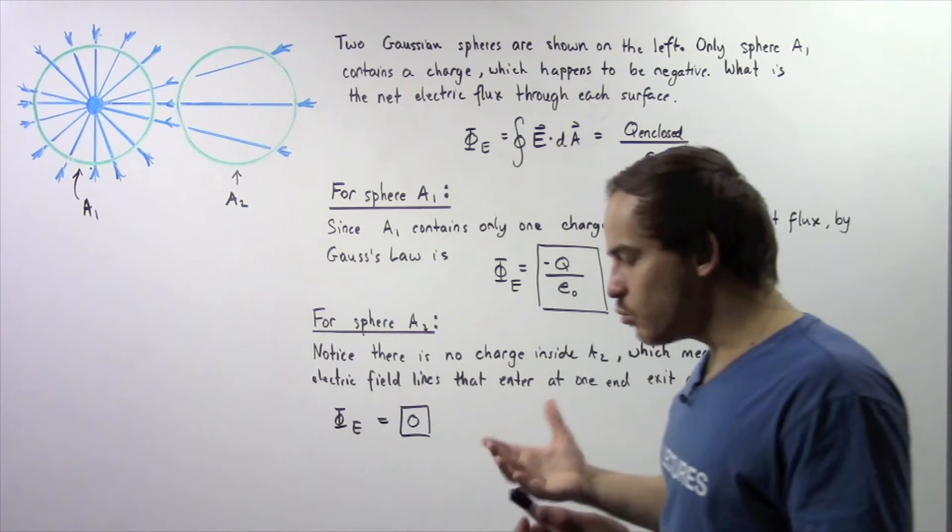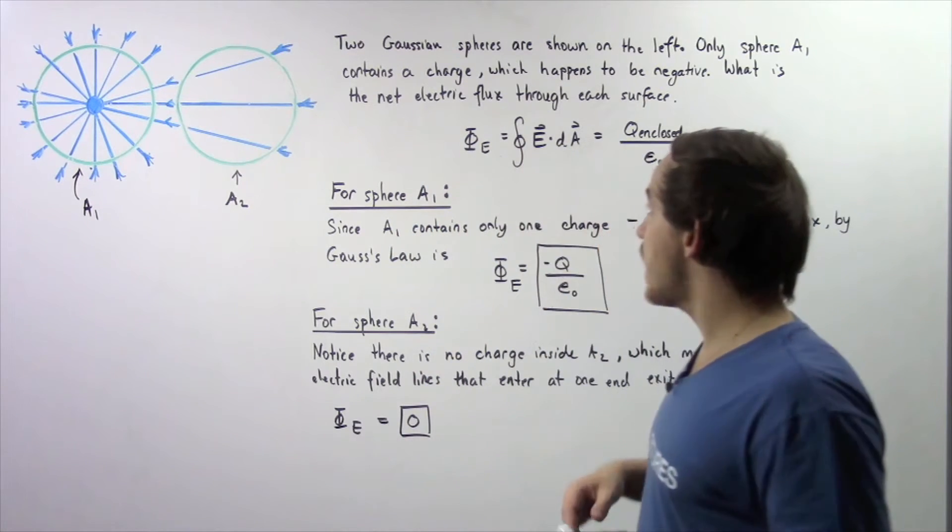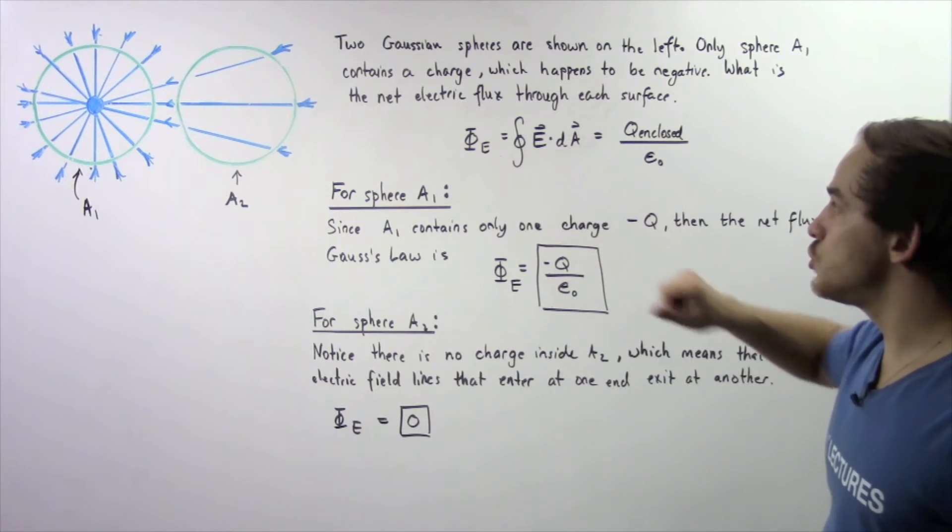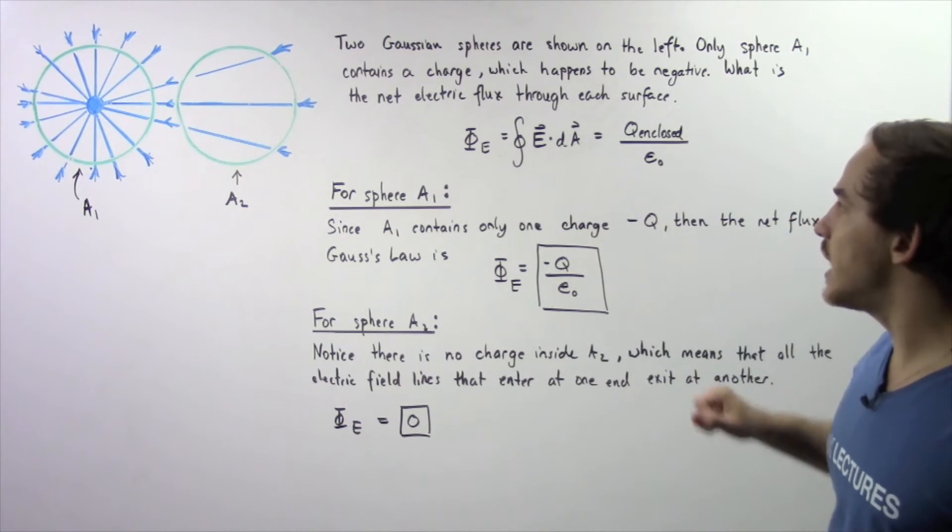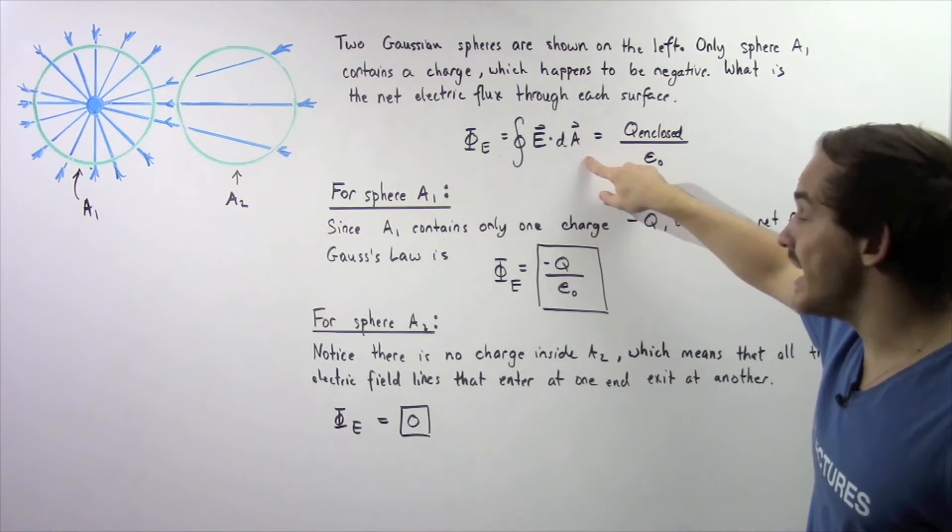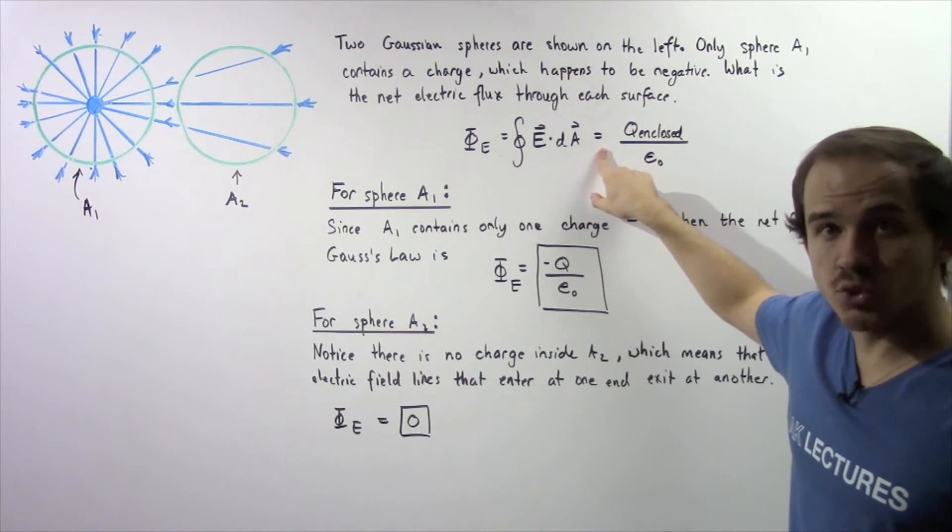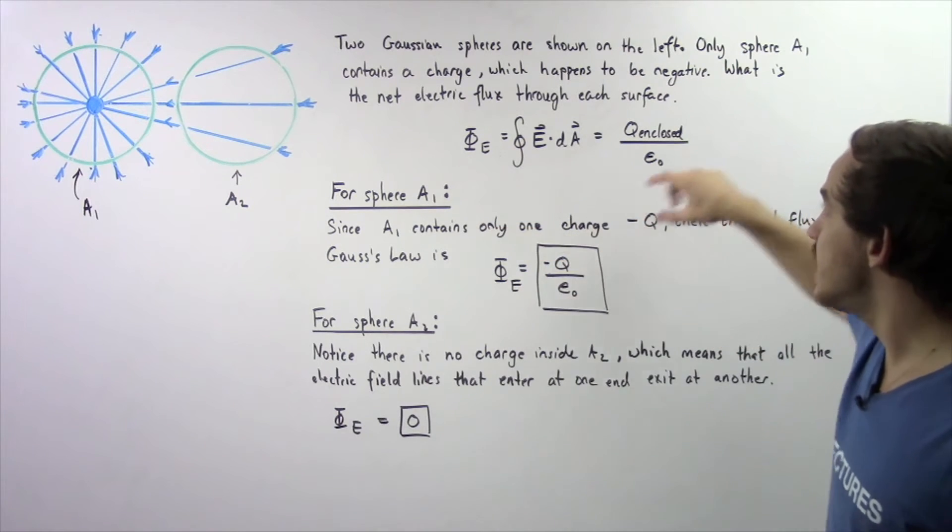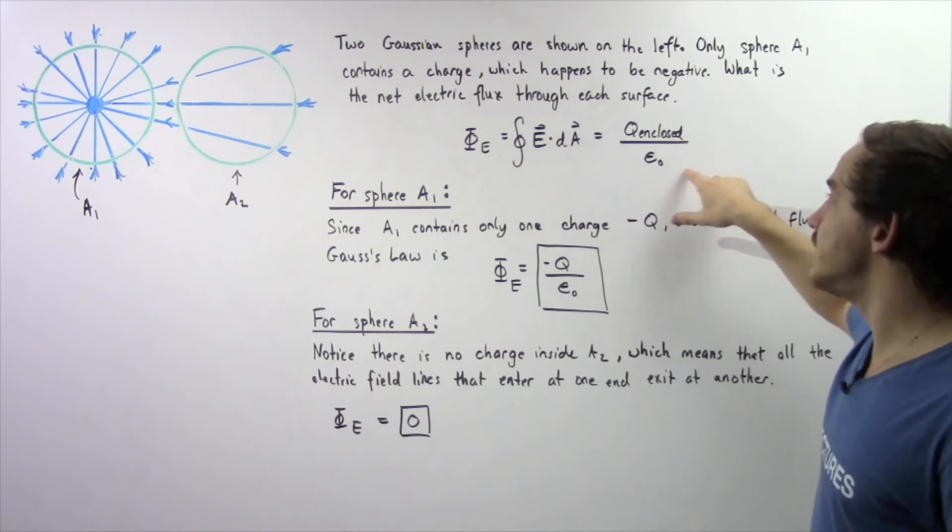So, we essentially want to use Gaussian Law, which states that the net electric flux is equal to the closed integral of the dot product E·dA, and that is always equal to the ratio of the charge enclosed within our region divided by epsilon naught.